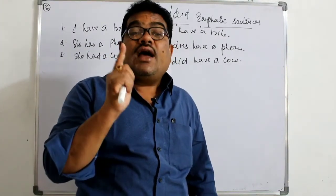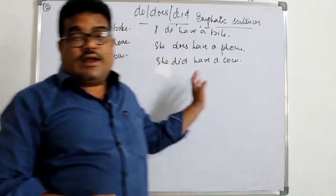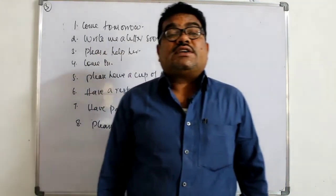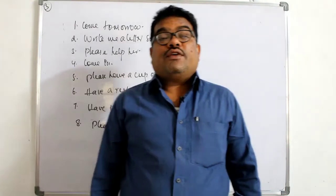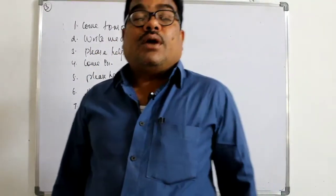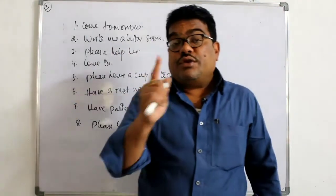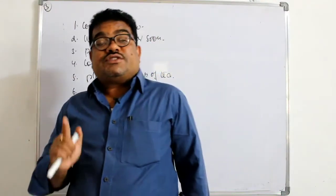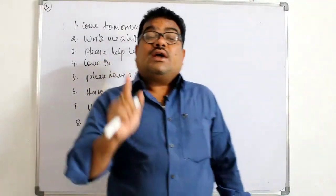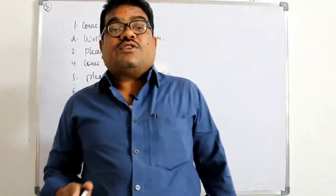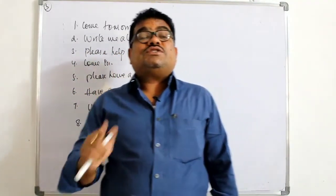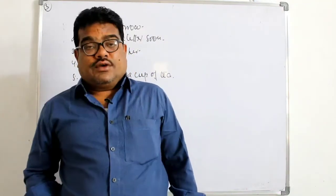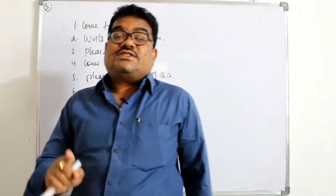Now the third and final type: how to make imperative sentences into emphatic sentences. You must keep in mind that in imperative sentences we must use 'do' before the verb. You must not use 'does' or 'did' — only 'do' is used to make imperative sentences emphatic.